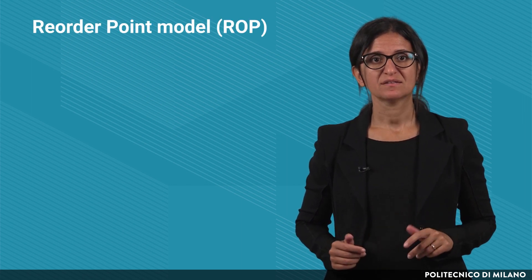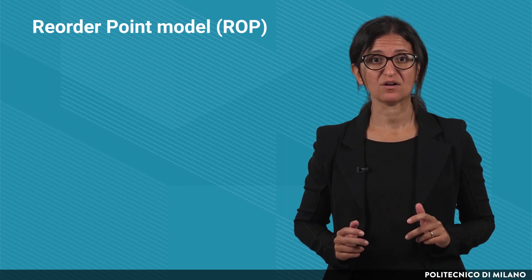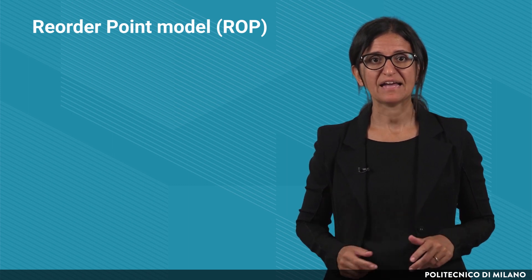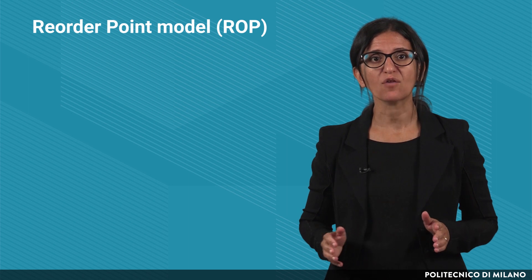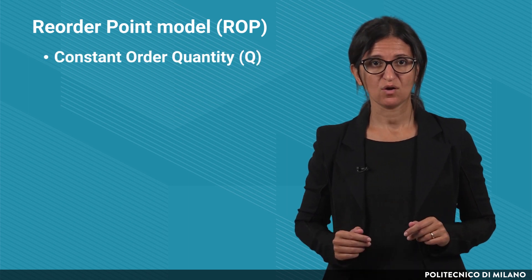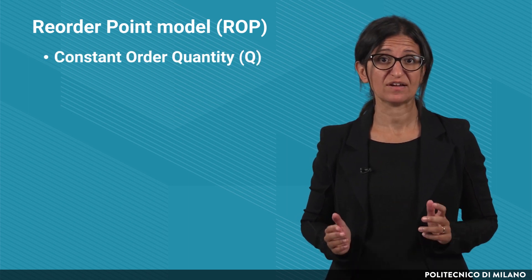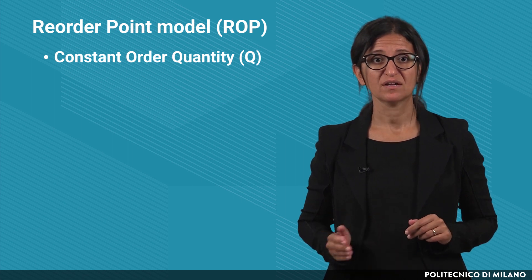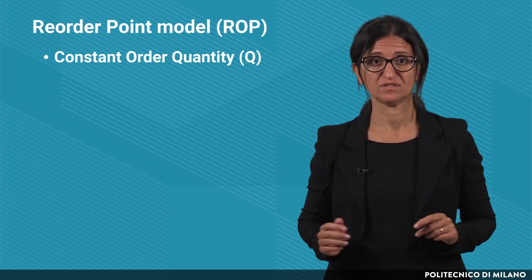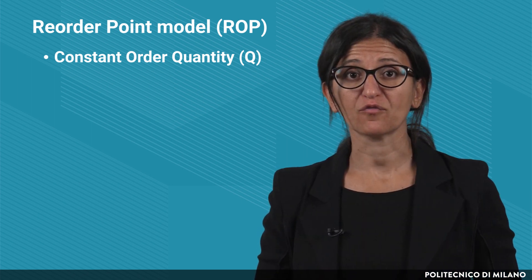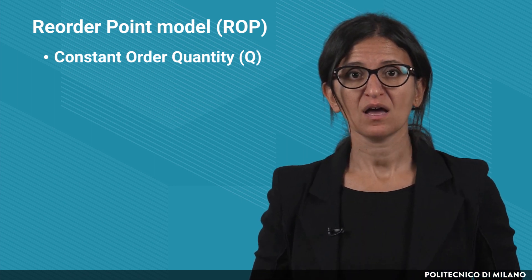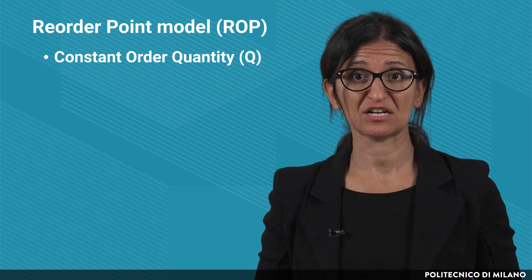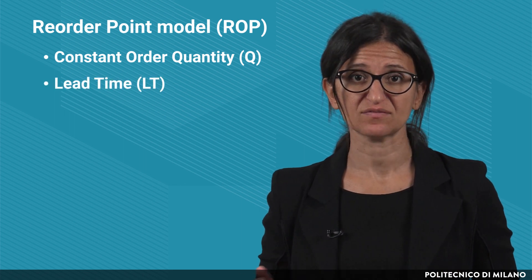In this lecture, we are going to analyze the first model for inventory management, that is the reorder point model. This model takes into account one item at a time, and it is based on the order of a custom quantity Q, which is issued when the inventory availability goes under a fixed value, the so-called reorder point quantity. Once the order of Q pieces is performed, we need to wait a certain replenishment lead time in order to receive the products.